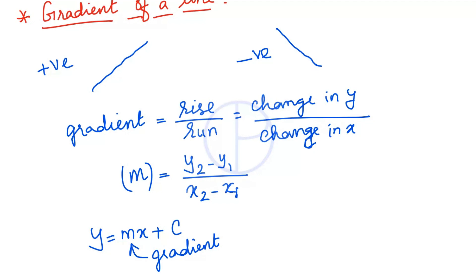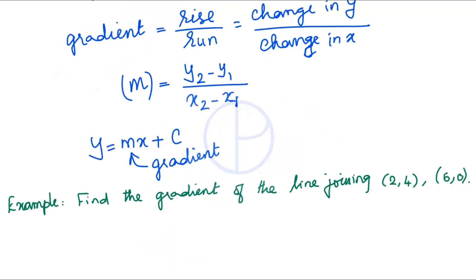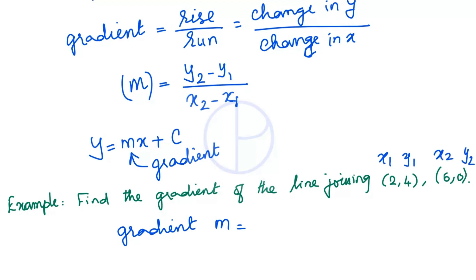Example: Find the gradient of the line joining (2, 4) and (6, 0). Using x1 = 2, y1 = 4, x2 = 6, y2 = 0: m = (0 − 4) / (6 − 2) = −4 / 4 = −1. So the gradient is −1, which means the line moves downwards.